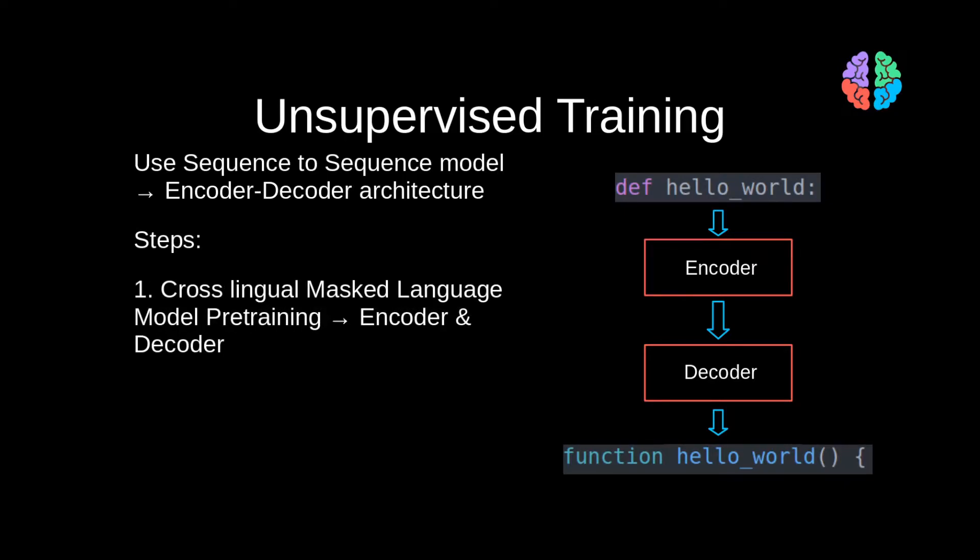The first one is the cross-lingual masked language model pre-training and the next one is denoising auto-encoding or fine-tuning the decoder further. And the last step is back-translation, which has become a very successful approach for unsupervised tasks. Now let's look at each of these steps.